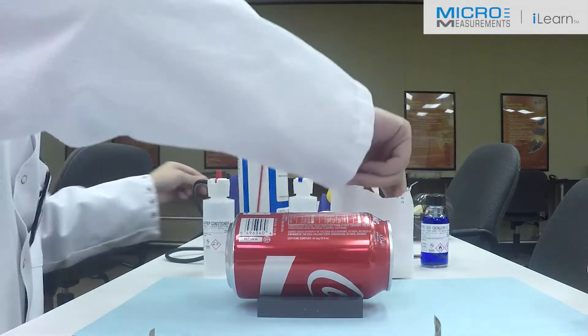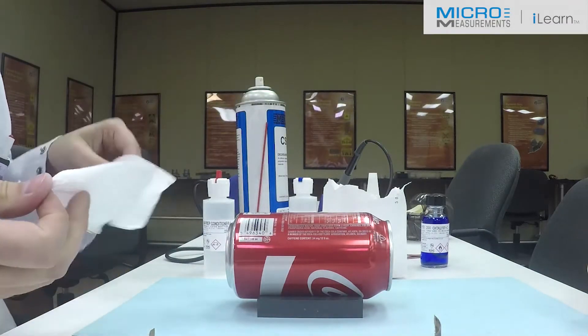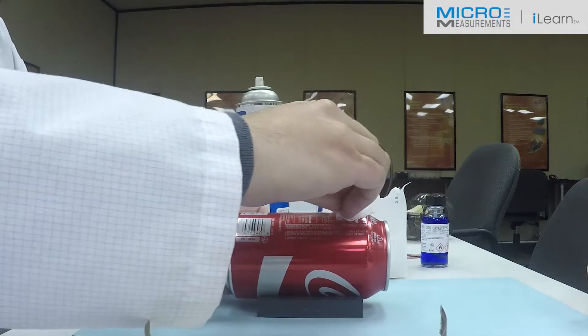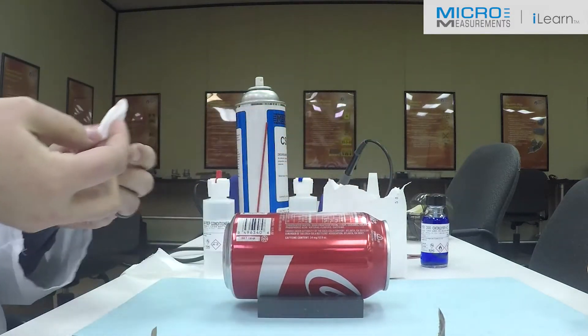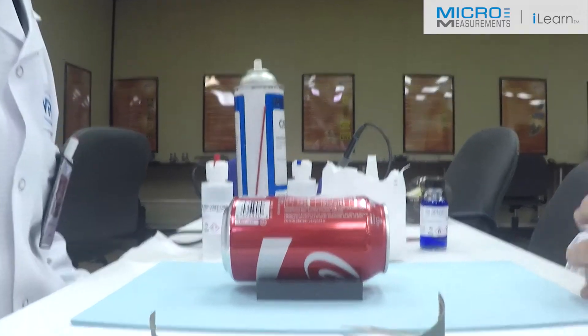Once he's fairly comfortable with removing the paint that he needed to remove, he'll take a gauze sponge, fold it into quarters, and with a single wiping motion absorb the contaminated material. Looks like he's got a pretty good surface there for bonding the gauge now.